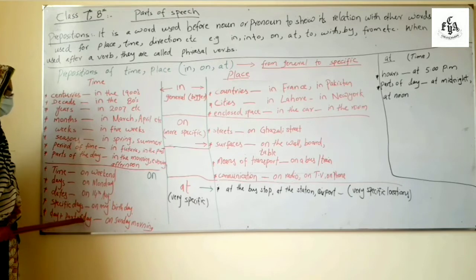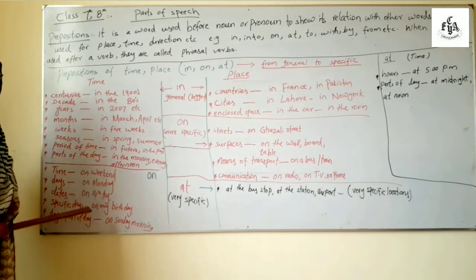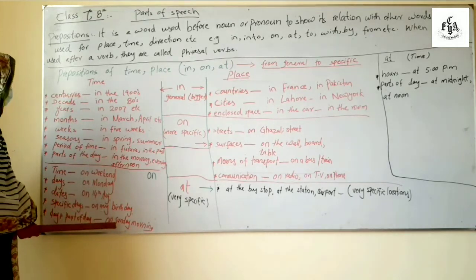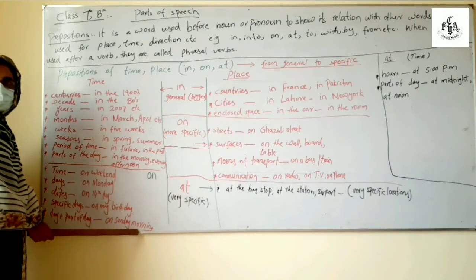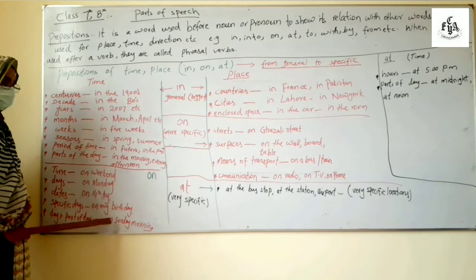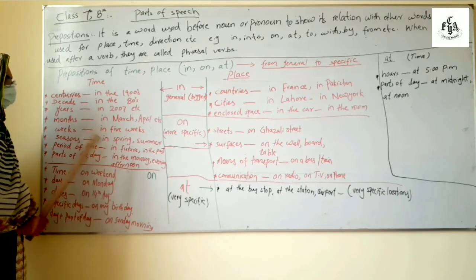Before dates like on 14th August and 23rd March. Specific days for example on my birthday and so on, each day. Day plus part of day, like when both are mentioned you will use on, for example on Sunday morning. This is day, this is part of the day, so in such cases you have to use on.